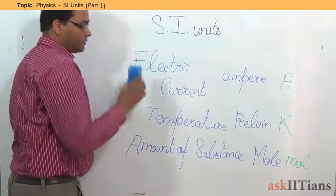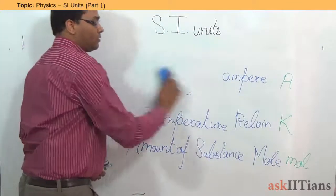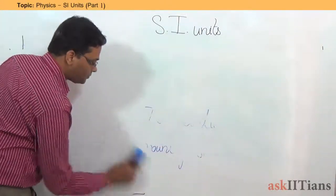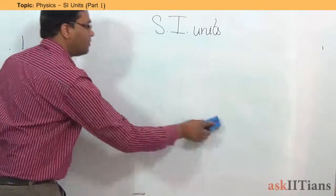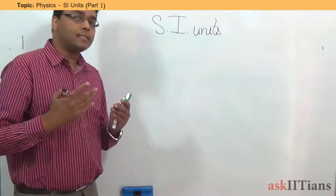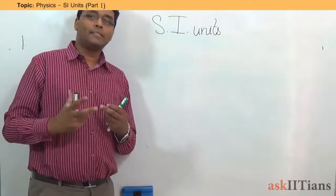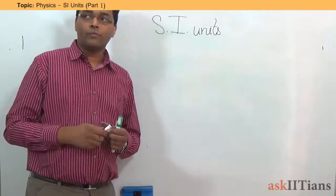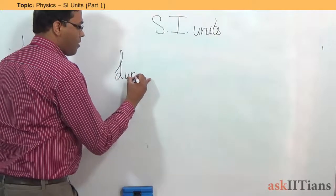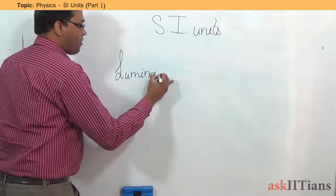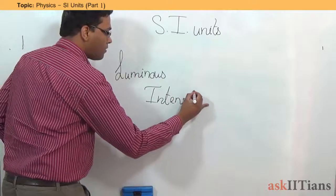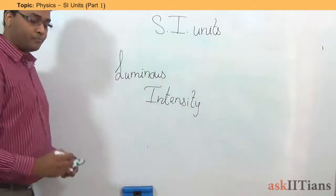One last system here then. This basically is related to how much is the intensity of light that is coming out of any particular thing. So, that is denoted by luminous intensity.